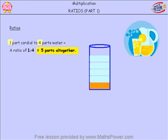There are five parts all together. One part cordial and four parts water. One plus four equals five. That's a ratio of one to four.